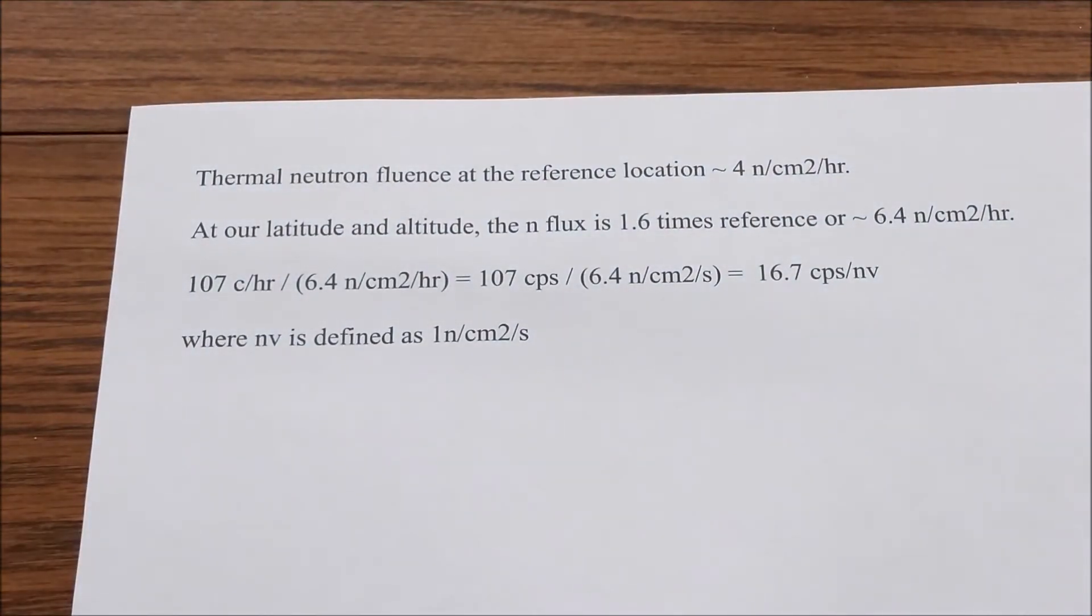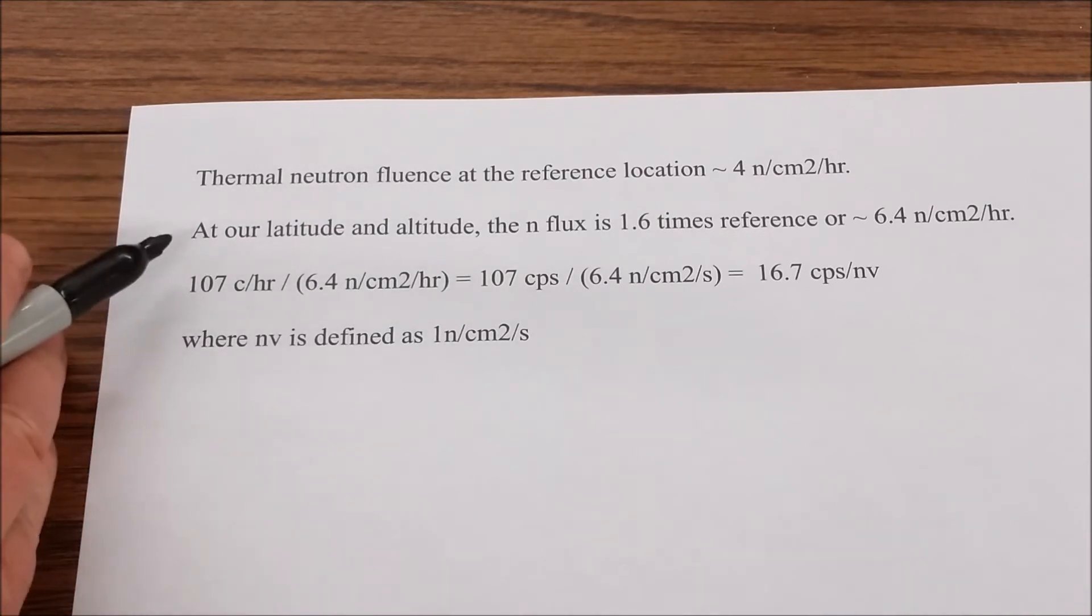So to do the math, a thermal neutron fluence rate at a reference location, which I think is in New York, is supposed to be about four neutrons per square centimeter per hour. At my latitude and altitude, the neutron flux is supposed to be 1.6 times the reference or about 6.4 neutrons per square centimeter per hour. There is an online calculator that gives you that. So I'll put the reference for this number and the calculator into the video description below.